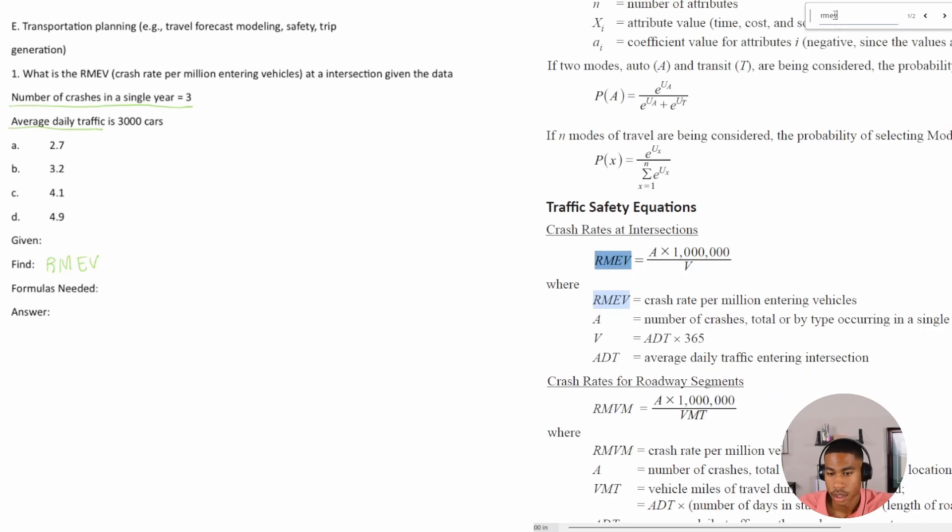All right, so now it's just a matter of looking at what they give us, right? It's at an intersection. I think that's important to note because they give us a crash rate of intersections and they give us crash rates for roadway segments. So this is at an intersection.